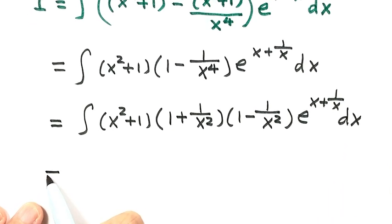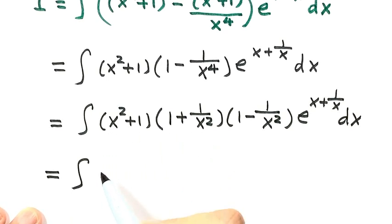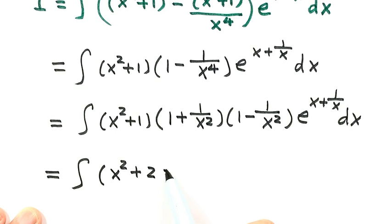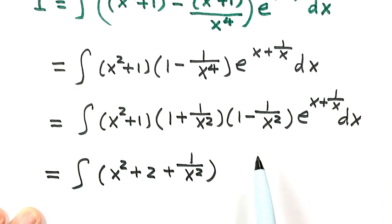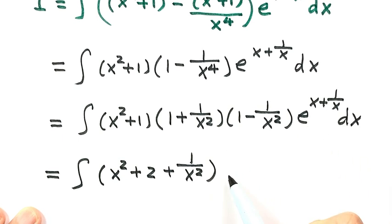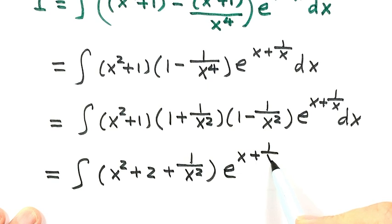Next we have to combine these two together. Expand the product. After simplifying, we have x squared plus 2 plus 1 over x squared. Now combine this part with dx. Write this one first: e to the power of x plus 1 over x.